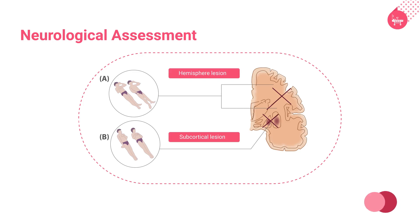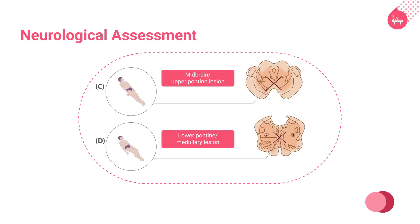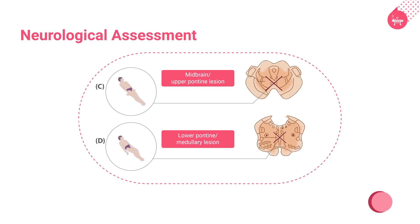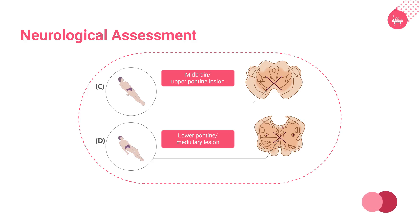C: Midbrain or upper pontine — a bilateral upper and lower limb extension response. D: Lower pontine or medullary — a bilateral extensor upper limb posture with either flaccidity or minimal diminished flexor response in the lower limbs.